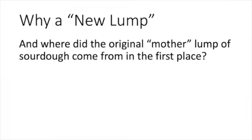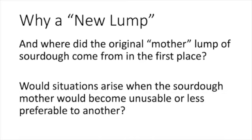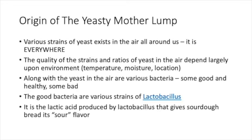So why a new lump? Where did the original mother lump of sourdough come from? And would there be situations where a sourdough mother would become unusable or maybe less preferable to another mother lump? The origin of the mother lump: yeast is all around us — it's everywhere, and there are various strains. It permeates the air everywhere. In reality, there's no such thing as becoming 100% unleavened — every house has leaven in it. The quality of this yeast really depends a lot upon environment, where somebody's located, the temperature, the moisture.